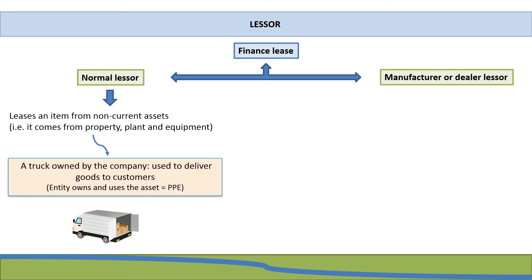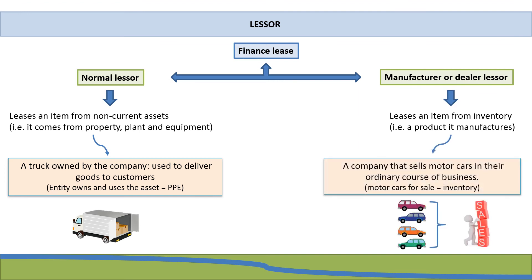A manufacturer or dealer lessor is one who leases an item from inventory. In other words, it's a product that is manufactured or a product that they are selling — they are a dealership of this product. An example would be a company that sells motor cars in their ordinary course of business. Those motor cars being held for sale come from inventory.